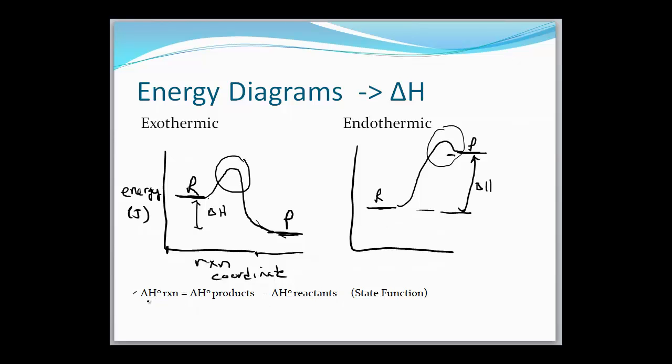So when we're going to calculate delta H for the reaction, what we want is the delta H value for all of our products, minus the delta H value for all of our reactants. So what we're interested in is the initial conditions and the final conditions. We're not too concerned with what happens in the middle here. Again, we'll talk about that when we talk about kinetics. But it's those initial conditions and those final conditions that we're concerned with.